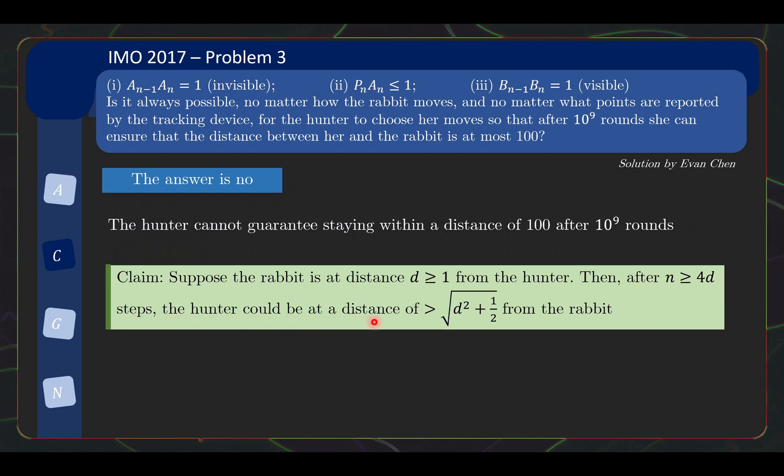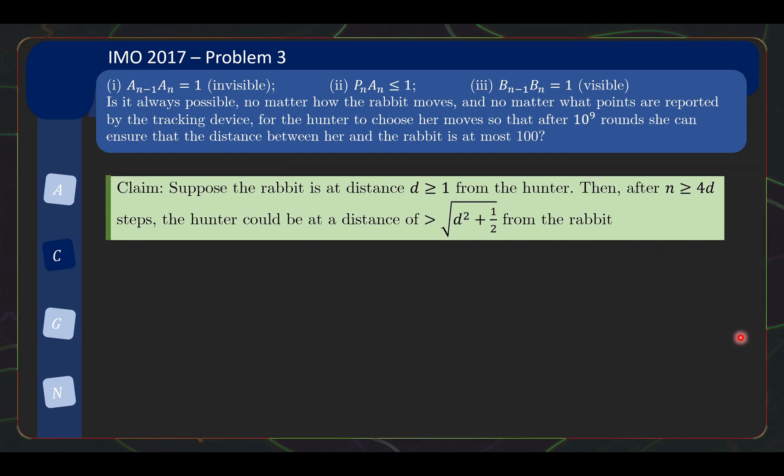So notice that this is slightly bigger than d. So this is what I mentioned earlier on about our general approach. We are going to show that starting from a certain distance, there is some scenario that will cause the distance to increase. So let us see how we can prove this claim. And this claim is actually not too difficult to prove as well. So suppose now that we have the rabbit at A and the hunter is at B and the distance is D. Of course, the hunter doesn't know where the rabbit is, so this diagram is drawn from a third person's perspective. Now I'm going to introduce two points, X and Y. So X is at distance n away, and distance 1 away from the line joining AB. Y is similarly defined, it's basically the mirror image of X across the line. Now, why do I introduce these two points? Because, consider the following two scenarios.